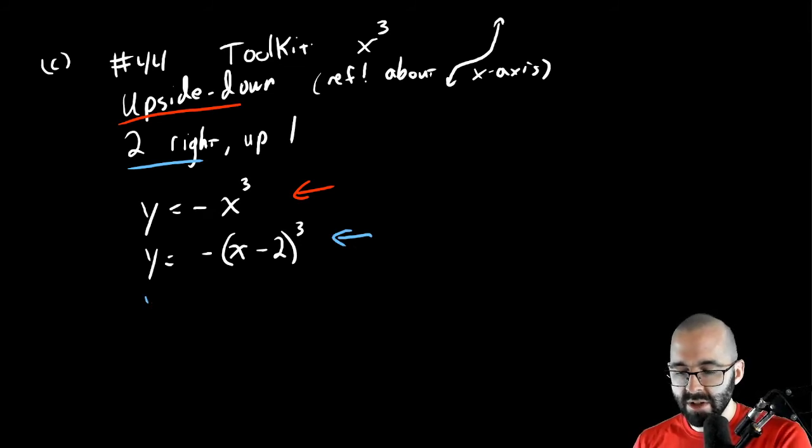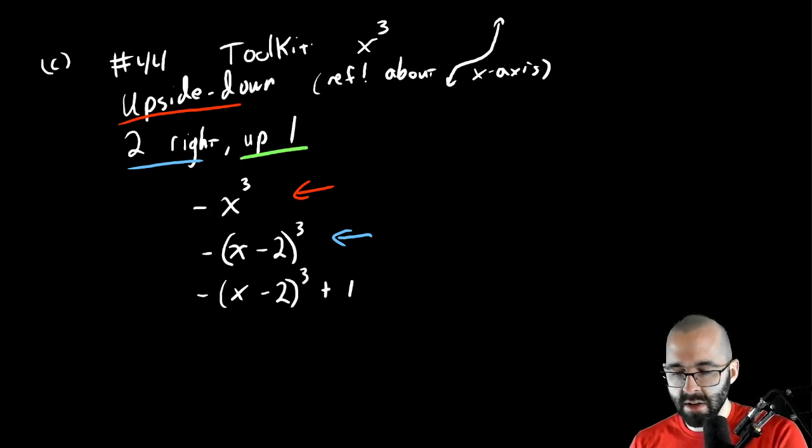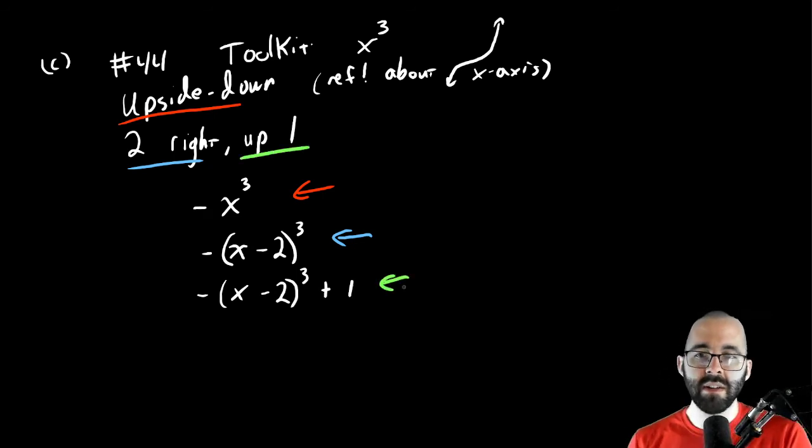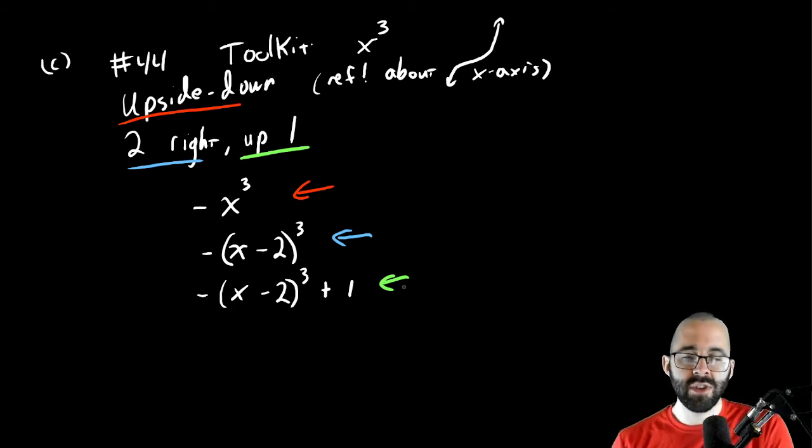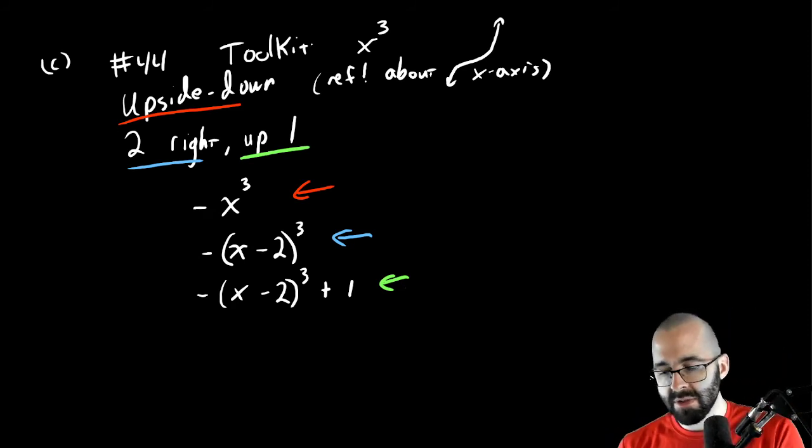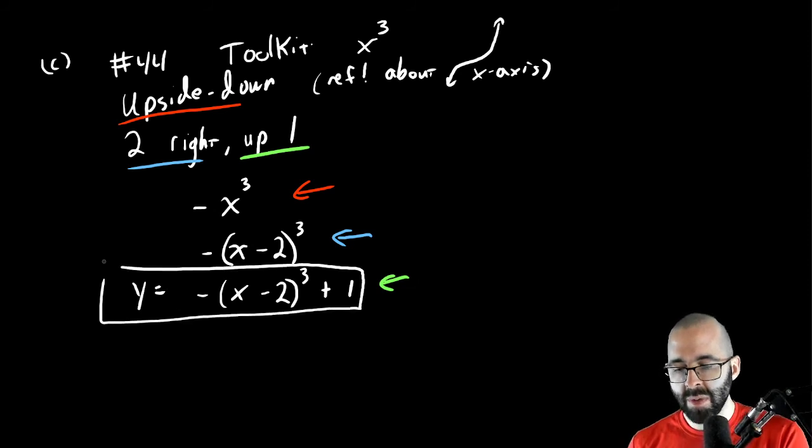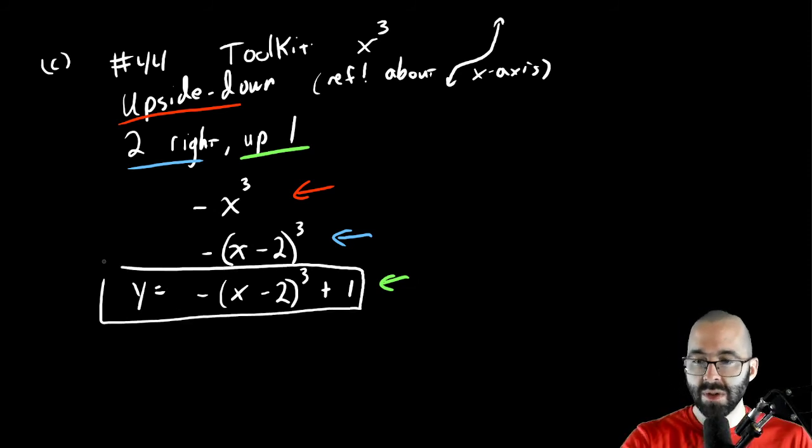And you could do it all at once, but doing it in steps like this is more helpful. Right? So this is the first part. And then two to the right means on the inside we're subtracting two. That's the second step. And now the third step, we shouldn't actually be calling all of these y. Then in the third step, right? We're adding one to make it up one. That's step three. And especially when there's a lot of transformations happening, it can be useful to do these step by step. But either way, this should be our answer. Let's check our answer with Desmos.